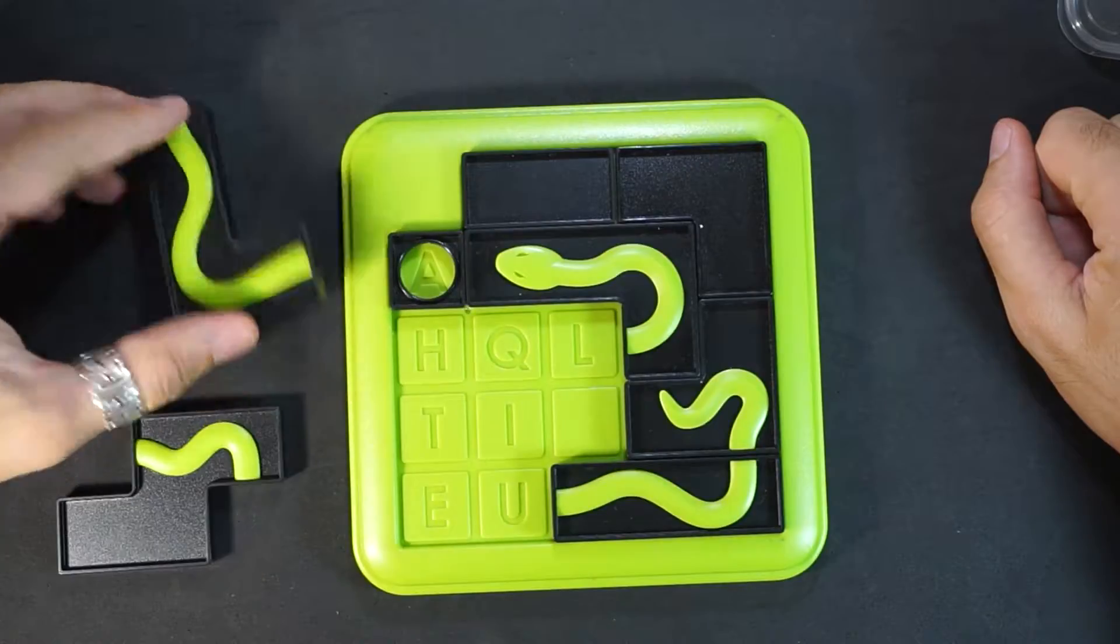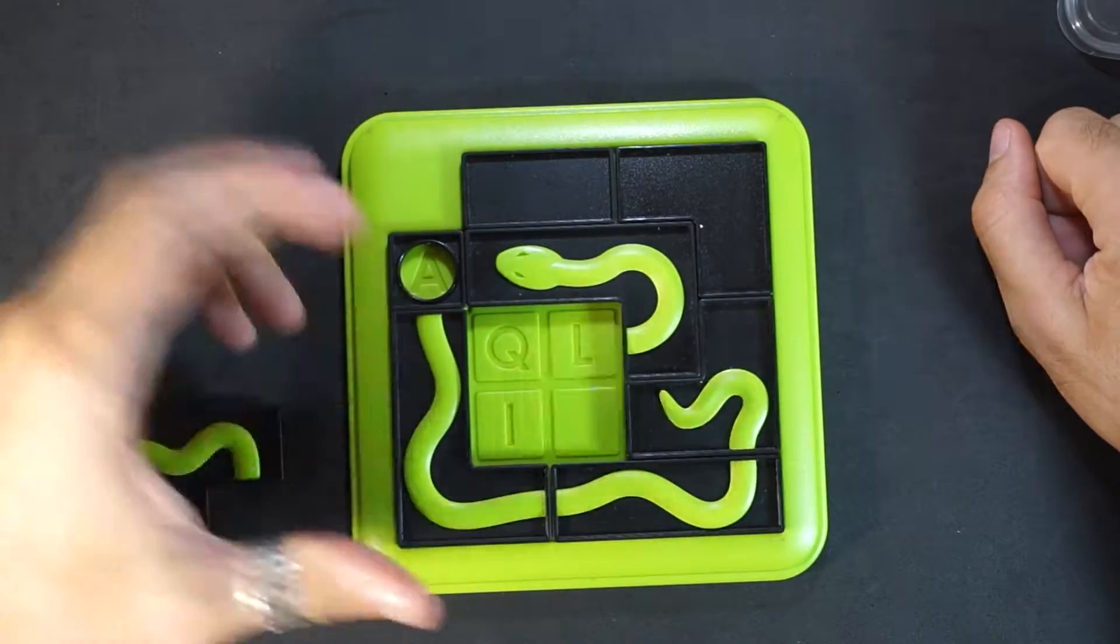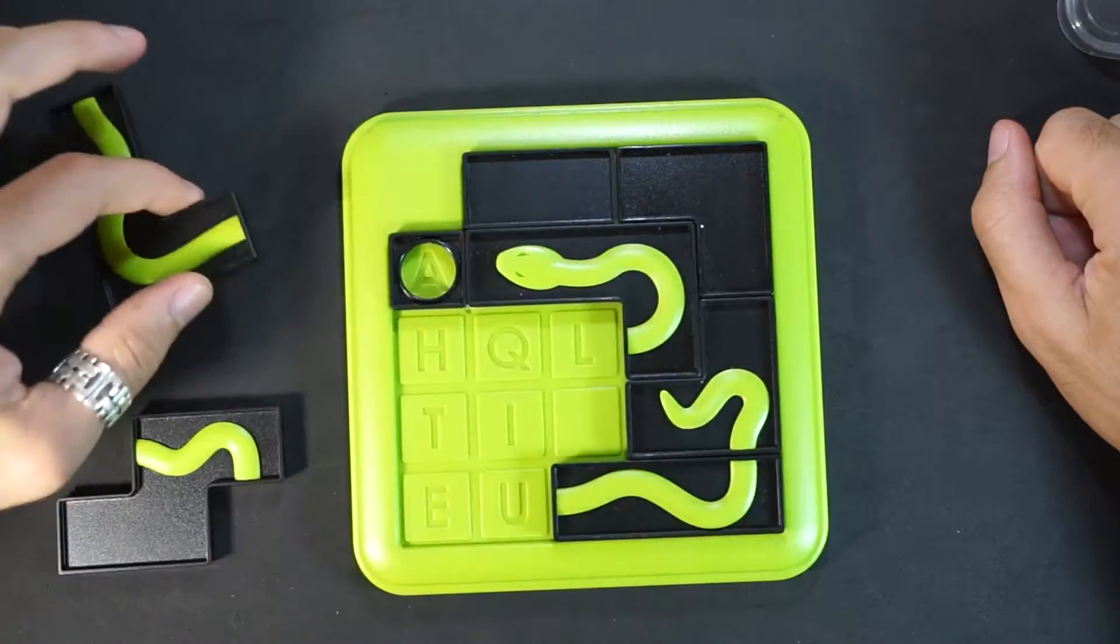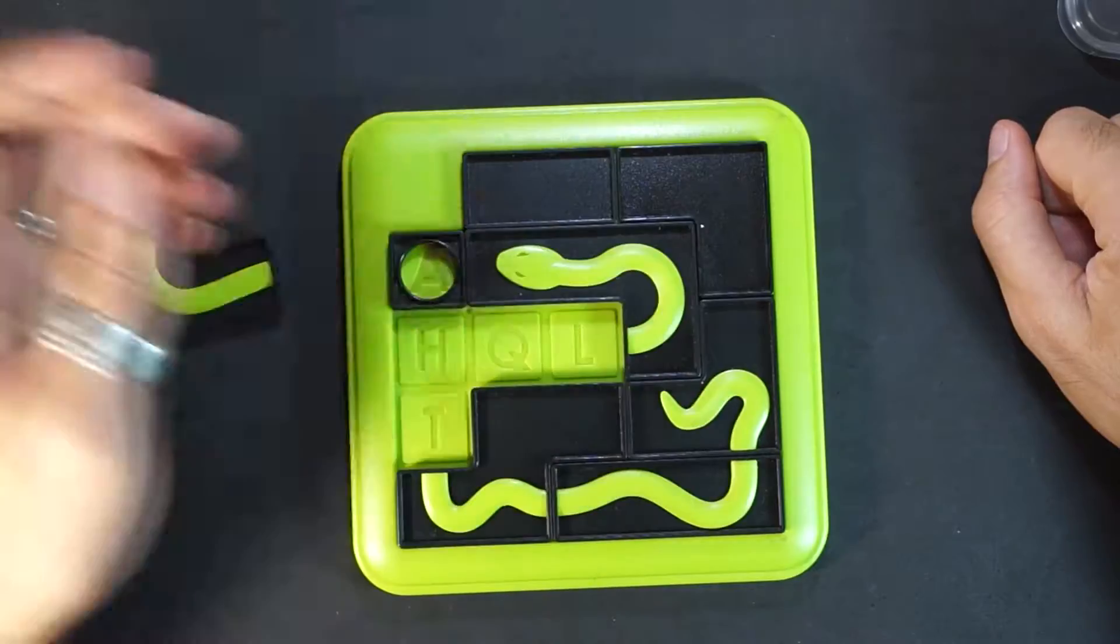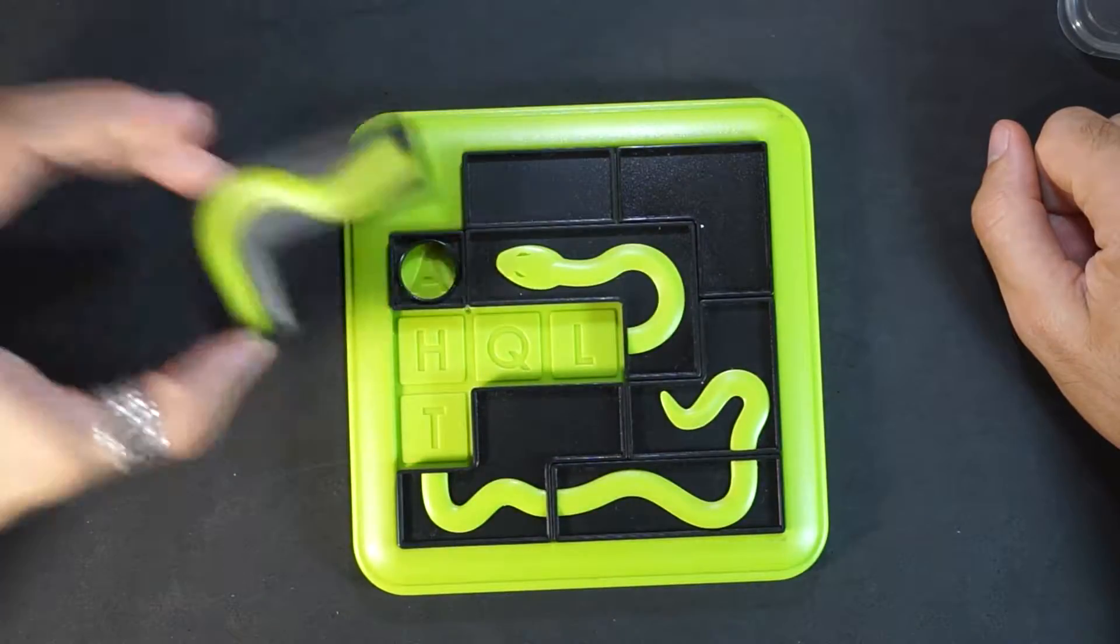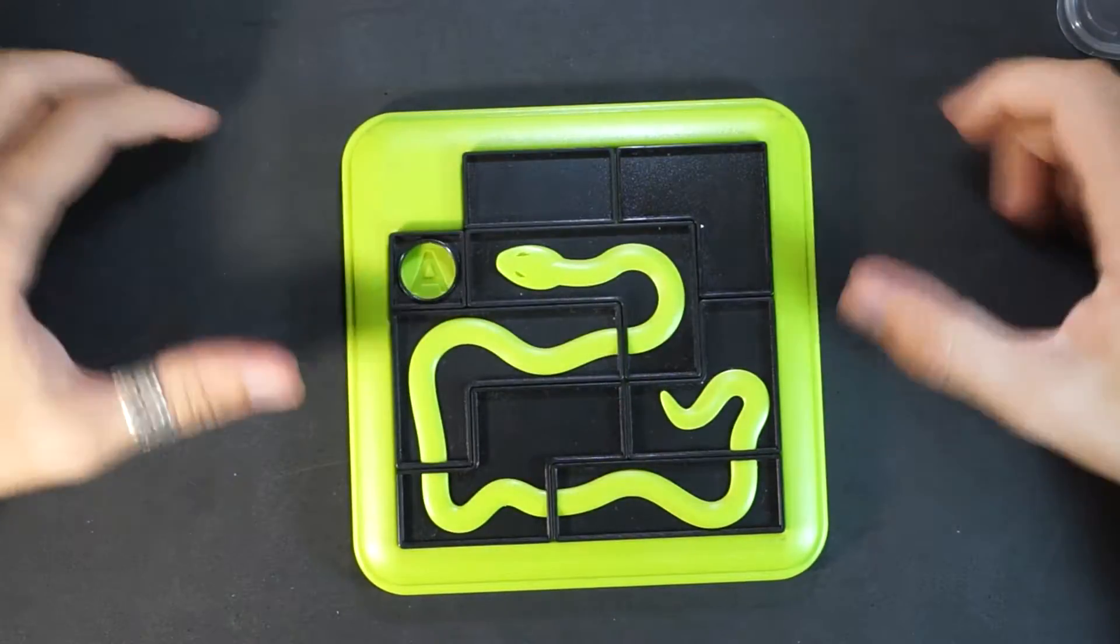Now if we placed this one here, we'd cut off the snake body on letter H. So we can't do that. However, if we place this other piece, it leaves a perfect space to fit the third and last piece. That's it with challenge two.